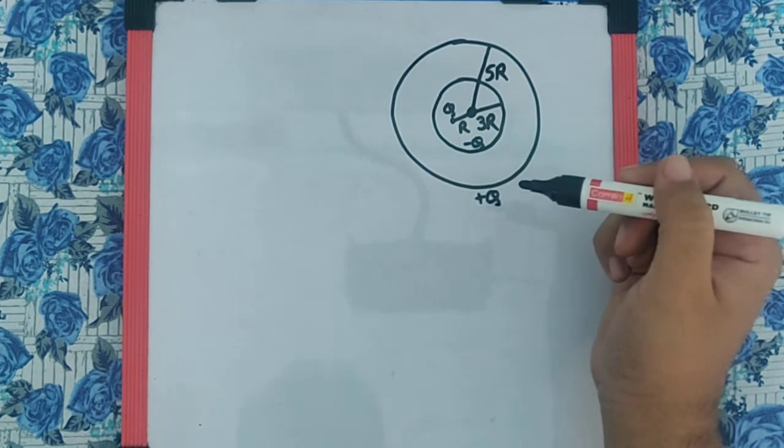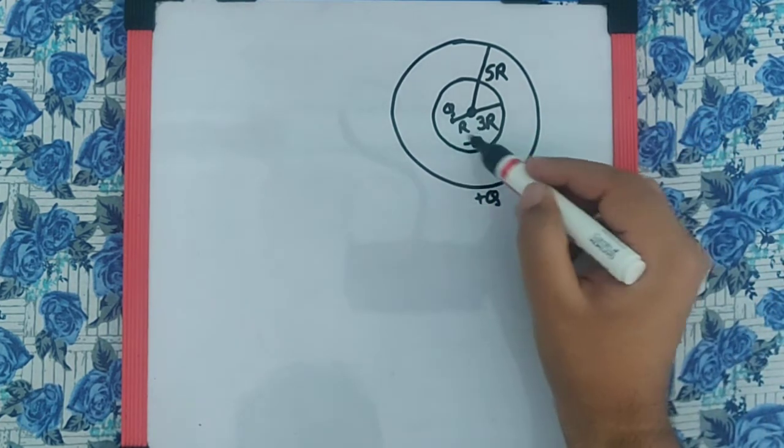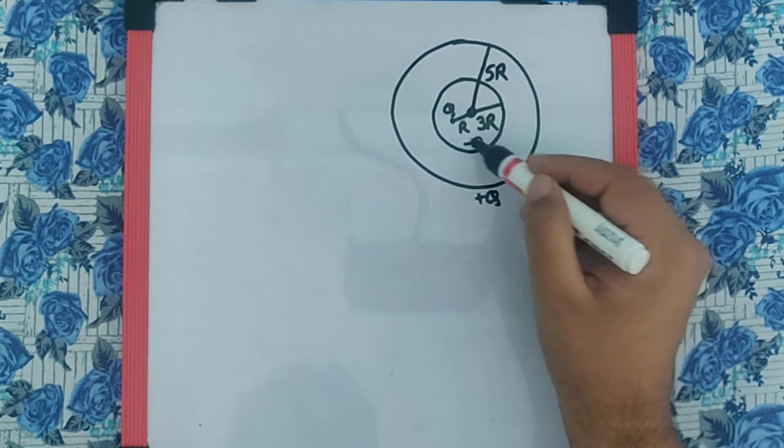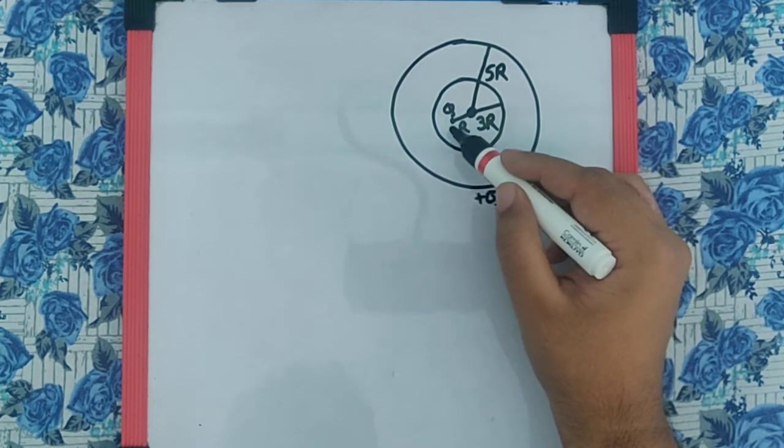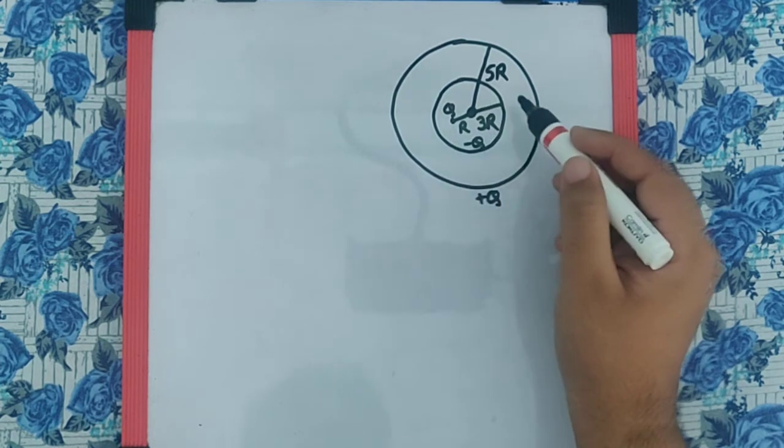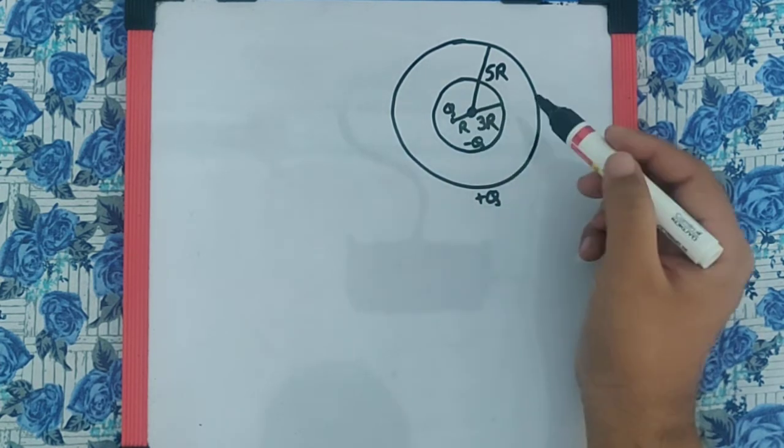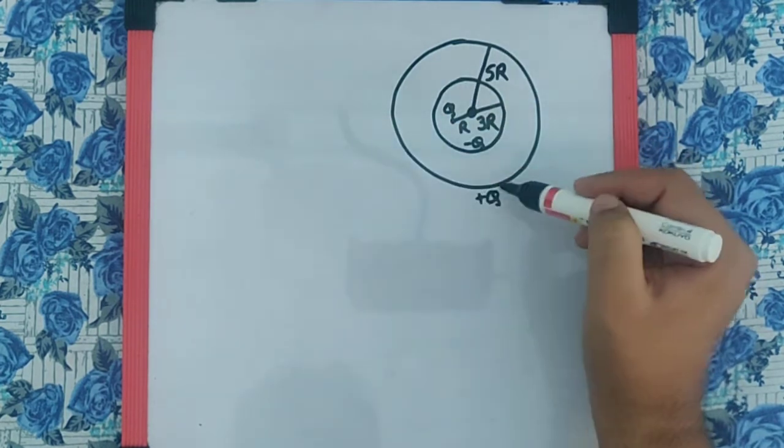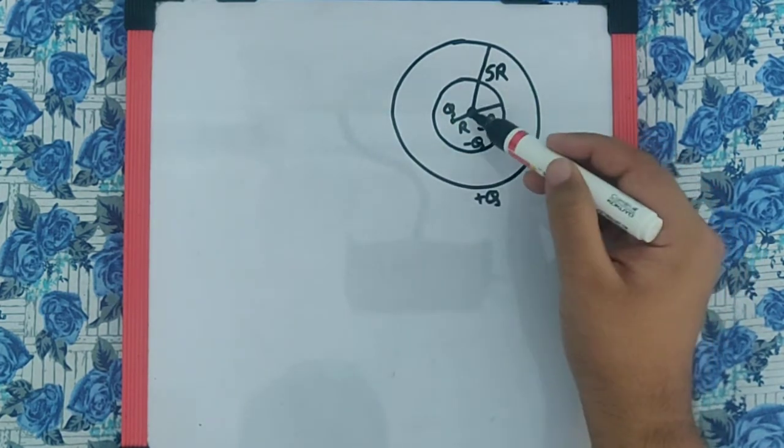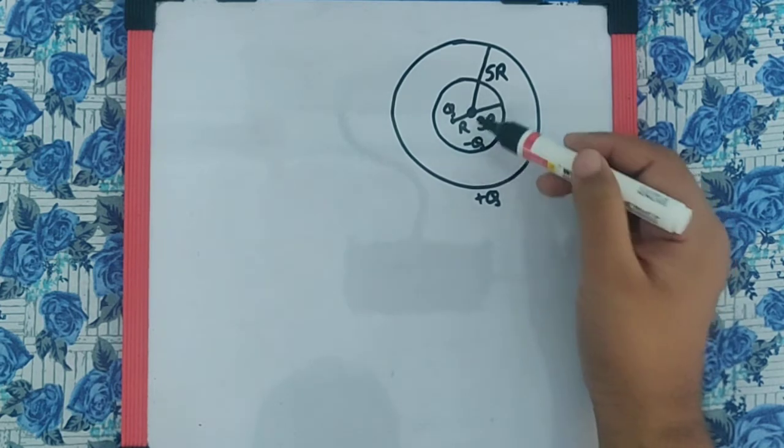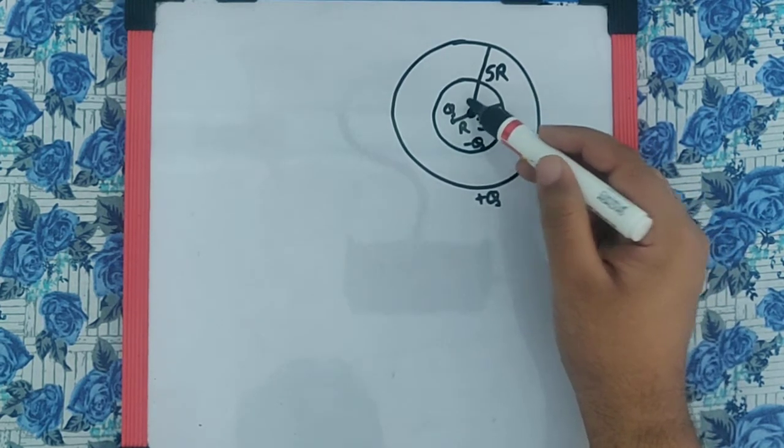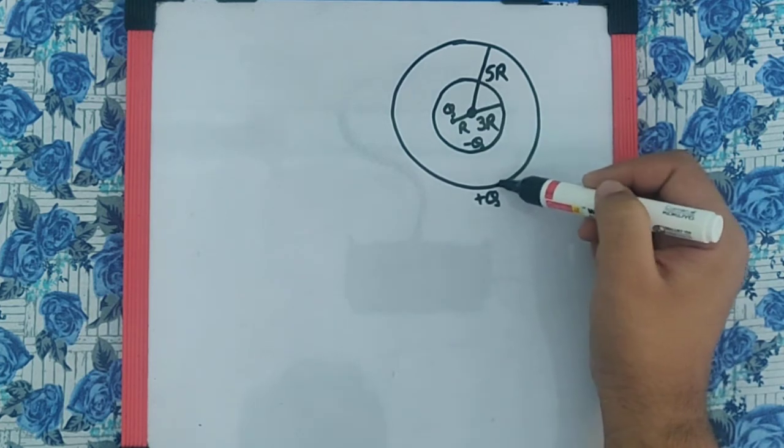Now, I hope you remember that for a point charge where we have the air in between, we can say the potential is directly 1 upon 4pi epsilon 0, q upon the distance. But for the sphere, if the point where the potential is to be found is inside the sphere, we can say the potential inside the sphere is equal to potential on the surface of the sphere.